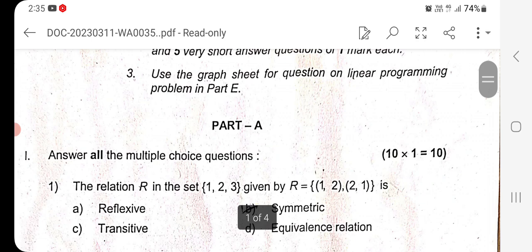Question 1: The relation R in the set containing the elements 1, 2, 3 given by R equals the ordered pairs (1,2) and (2,1) is a symmetric relation. So if AB belongs to R, definitely BA also belongs to R. This is a symmetric relation.